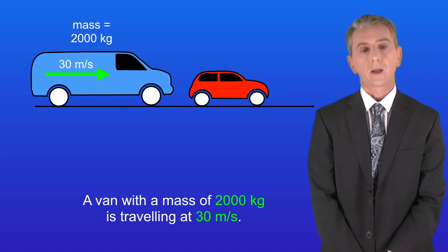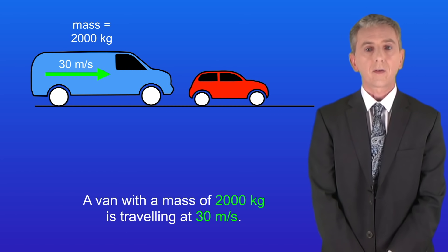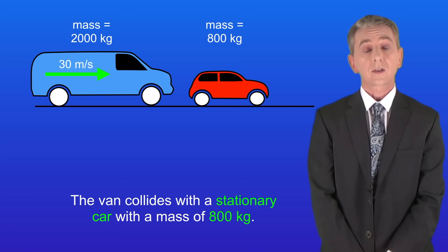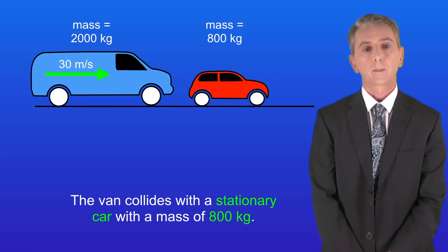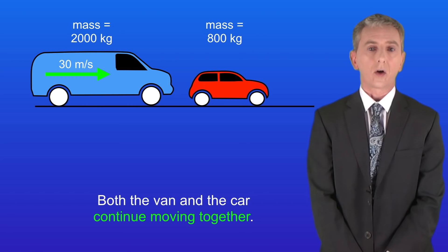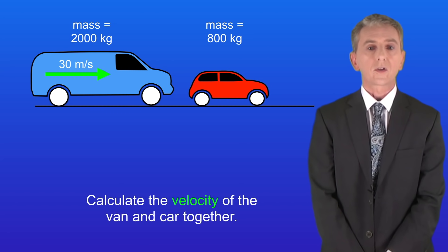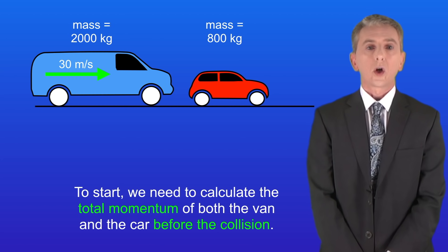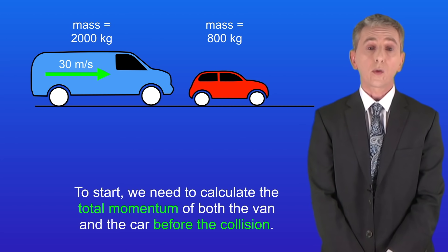Here's a sample question. A van with a mass of 2000 kilograms is traveling at 30 meters per second. It collides with a stationary car with a mass of 800 kilograms. Both the van and the car continue moving together. Calculate the velocity of the van and the car together. To start we need to calculate the total momentum of both the van and the car before the collision.